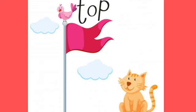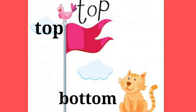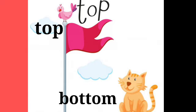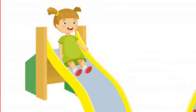In this picture there is a bird and a cat. The bird is on the top of the flag and the cat is at the bottom of the flag. Bird on the top and cat at the bottom.